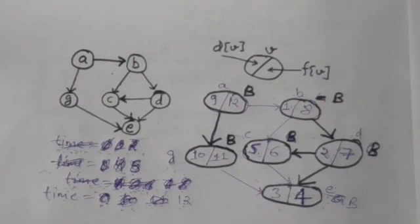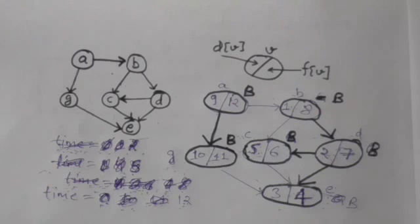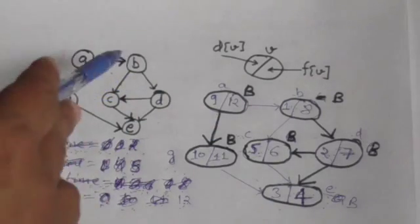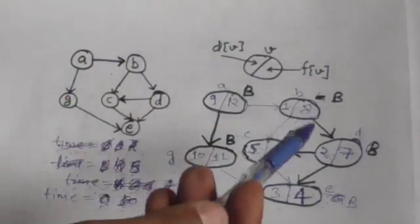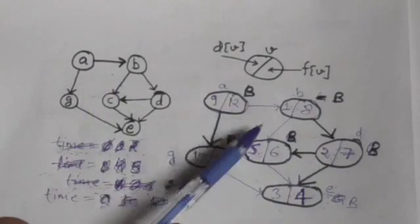Suppose this directed acyclic graph is given to us, and what we have to do is topologically sort it. First of all we will apply the depth first search algorithm on this graph and get the finishing time of all vertices. Here we have applied DFS on this graph and we have the finishing time of each vertex.